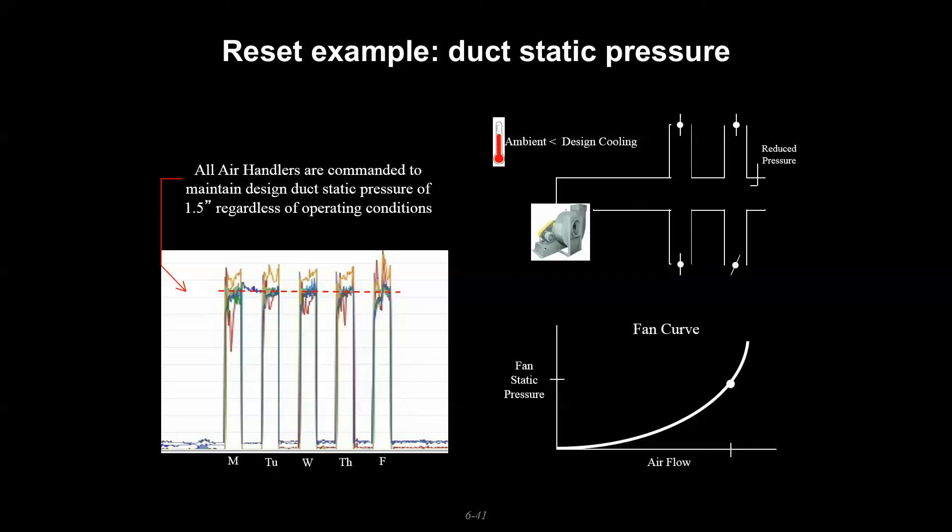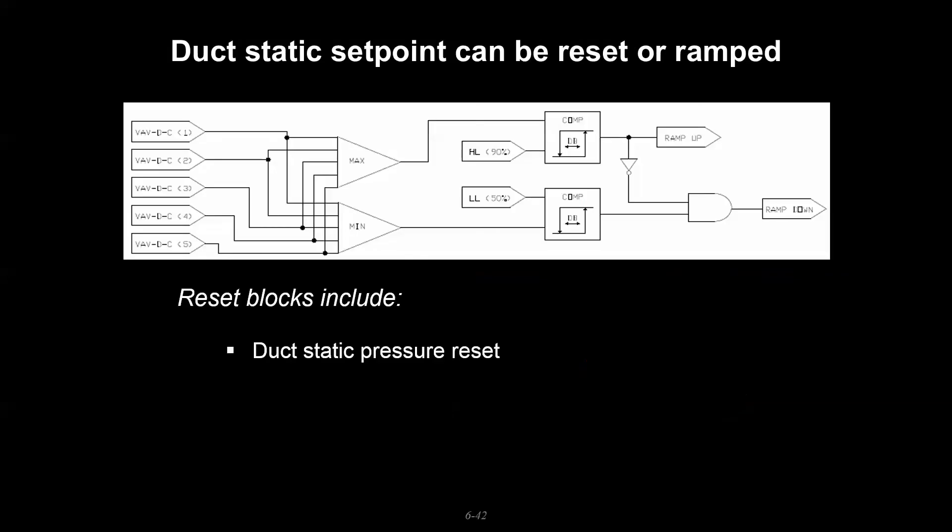That's some of the logic about why we reset some of our setpoints, and we can do that with duct static pressure. We do that with a lot of hydronic temperature setpoints on the supply side. We may also do that on the air side with air being discharged from a coil. We may also do that on the air side on the coil discharge setpoint.